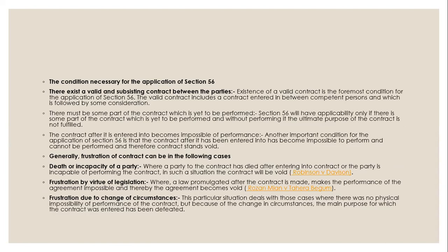The conditions necessary for the application of Section 56 of the Indian Contract Act are: first, there must exist a valid and subsisting contract between the parties, including competent persons and some consideration. Second, there must be some part of the contract yet to be performed, without which the ultimate purpose of the contract is not fulfilled. Third, the contract after it is entered into must have become impossible to perform, and therefore the contract stands void.